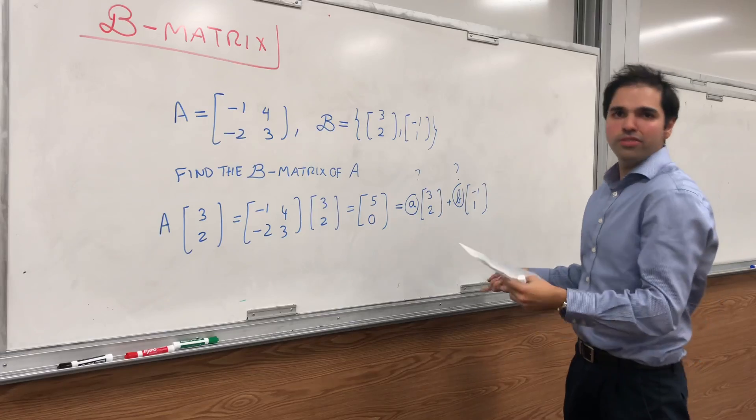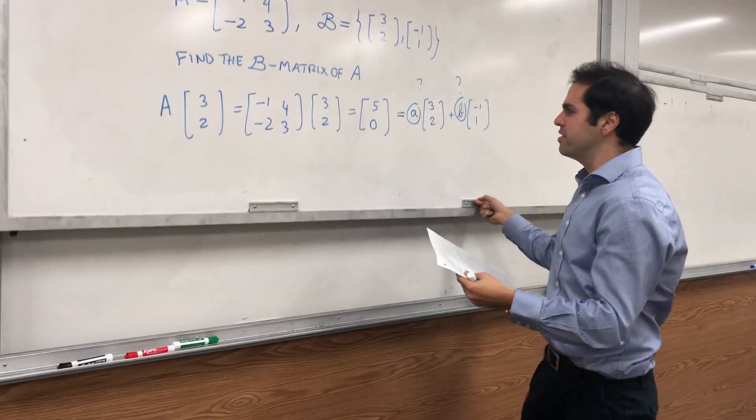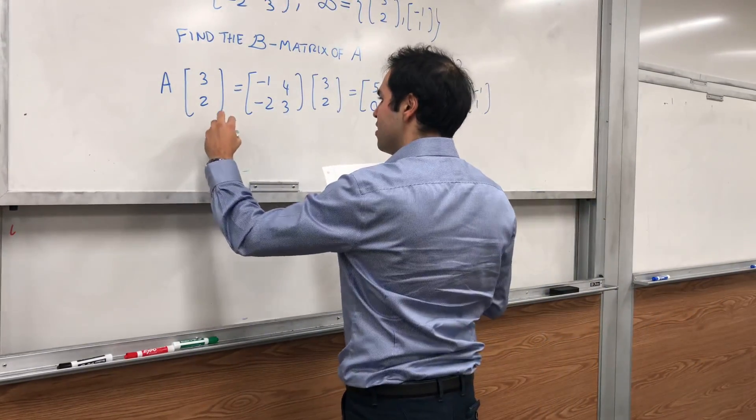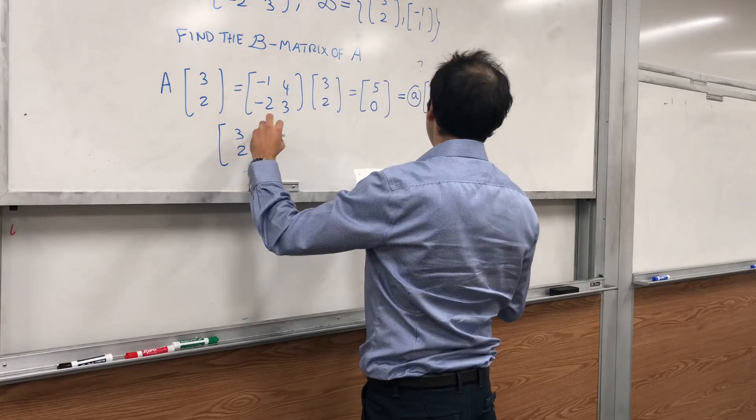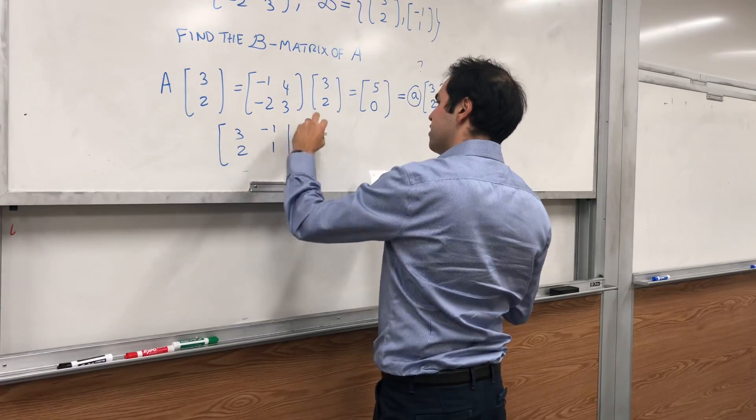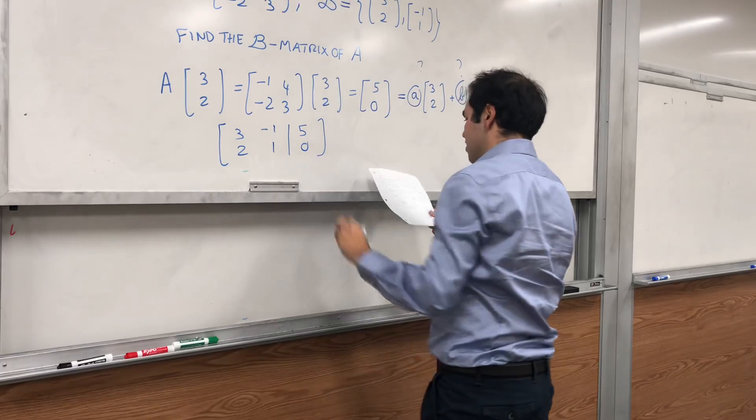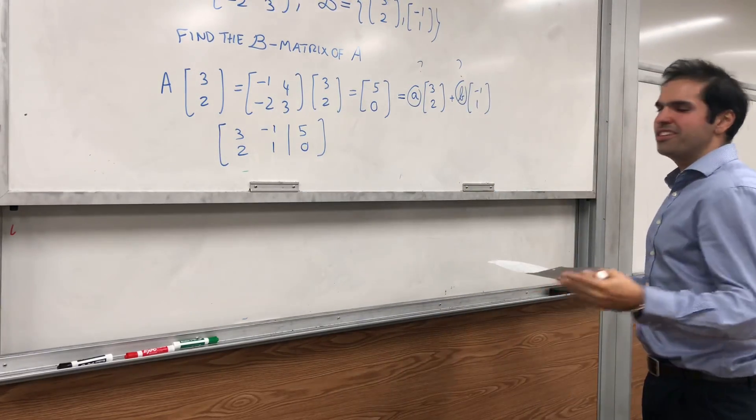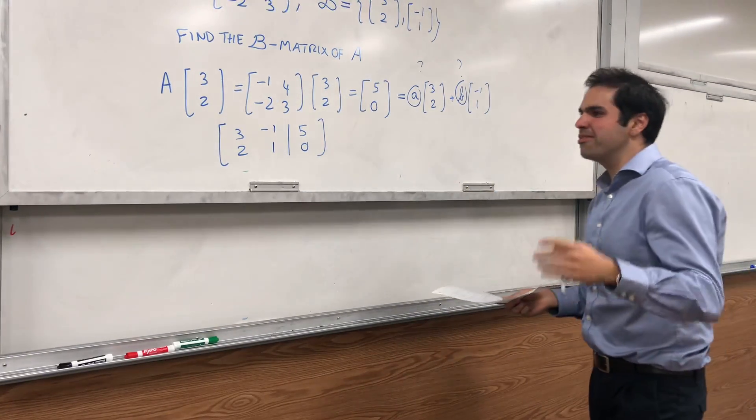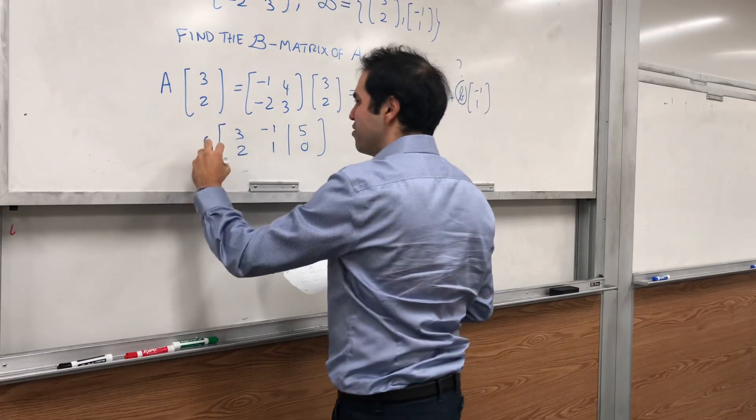And so for this, you'll see we just have to reduce a system. So do [3, -1; 2, 1 | 5, 0]. Unfortunately, there isn't a very clever way of doing this, so just do it by brute force.